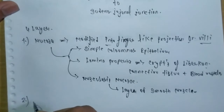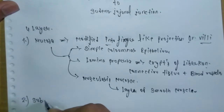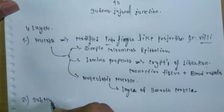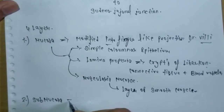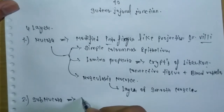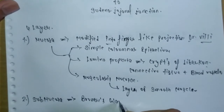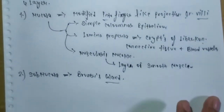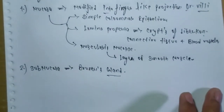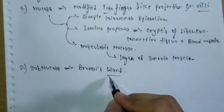The second layer is submucosa, where blood vessels and glands are found — specifically Brunner's glands, which are the identifying feature of the duodenum.